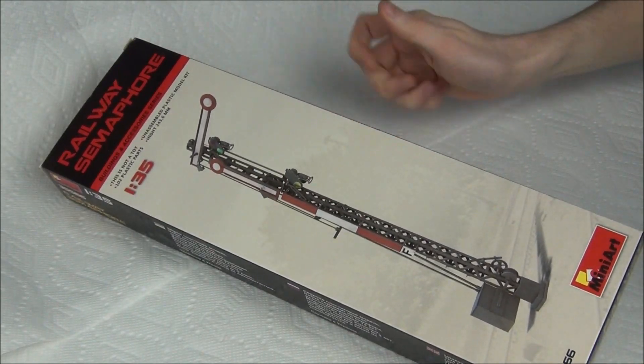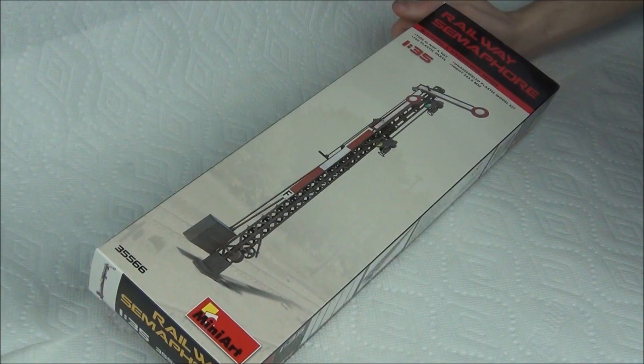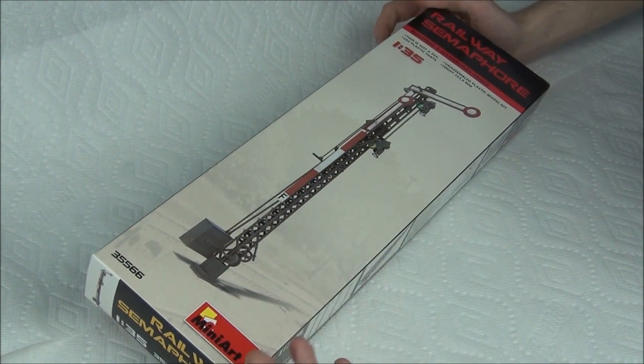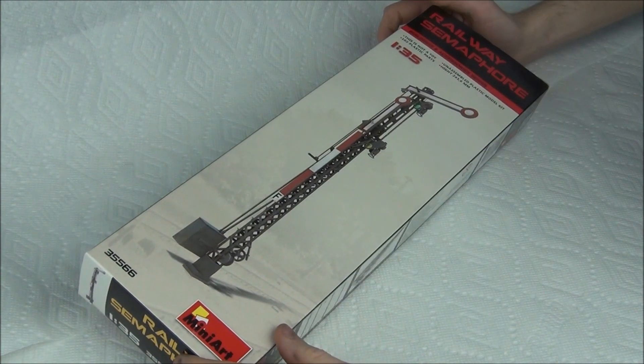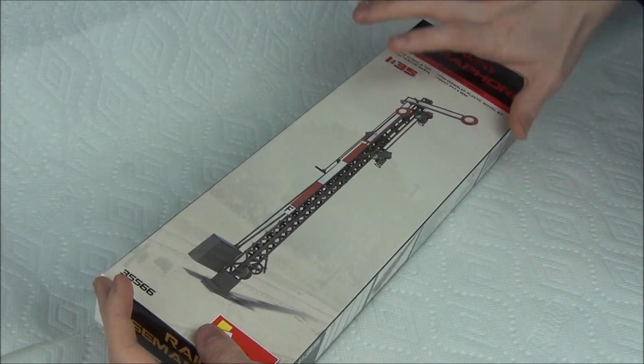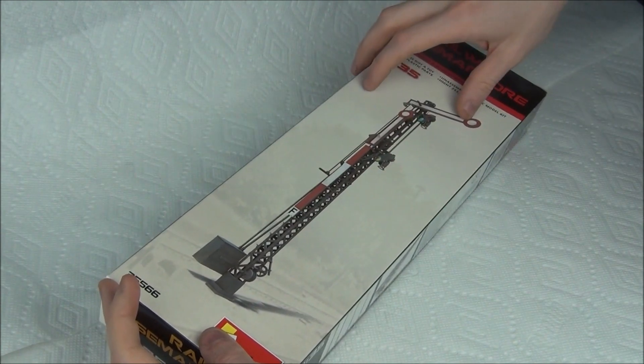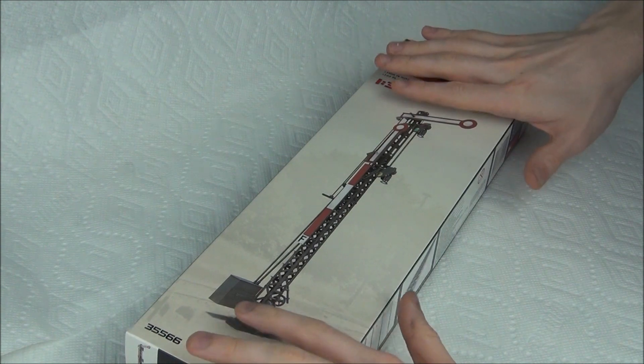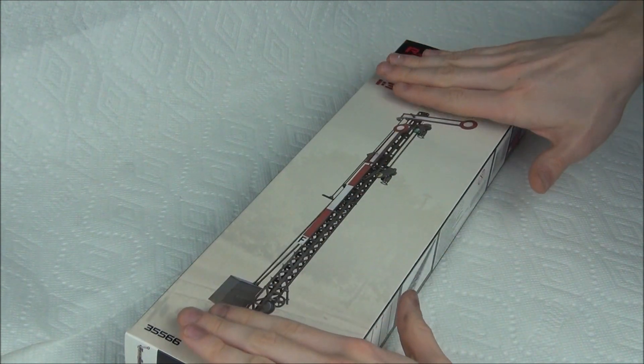I'm going to give you guys an inbox review here and just show you what it's like. The box itself is about the normal length of a standard kit box like a Dragon or Tamiya style one, but it's only about 5 inches wide, so it's very thin and long. That makes sense considering this is a very thin and long object. I did some quick measurements and it looks to be about the same size as shown on the box.